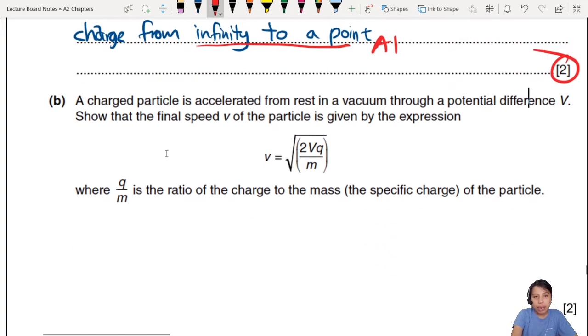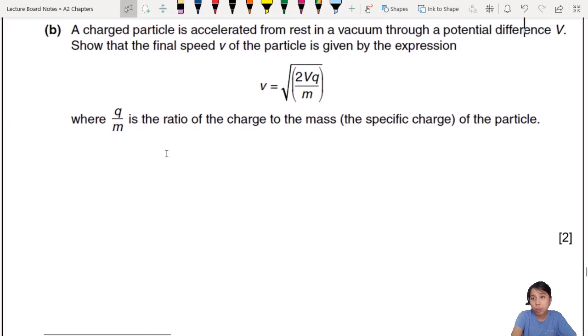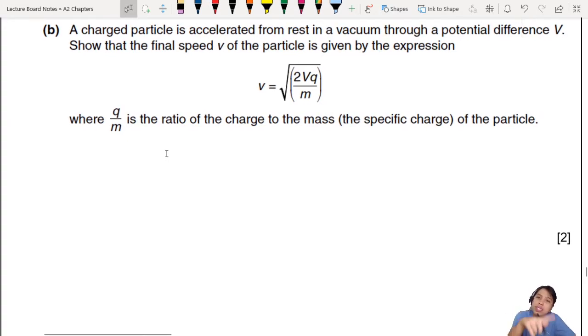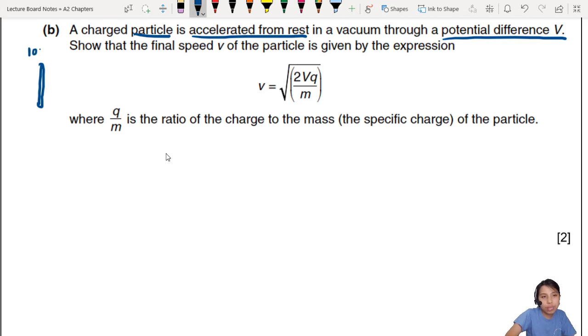The next part: A charged particle is accelerated from rest in a vacuum through a potential difference V. Show that the final speed is given by this equation. If you feel stuck, draw a picture. Think back to your uniform electric fields. If you have a plate here at 100V and this one at 0V, so high potential and low potential plate, and you place a tiny charged particle here at rest, positively charged, where is it going to move once you turn on the system?